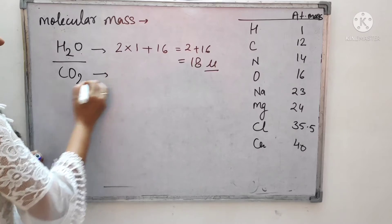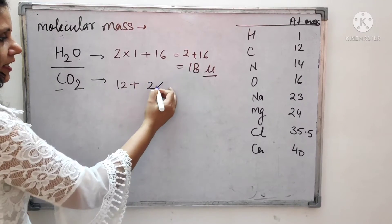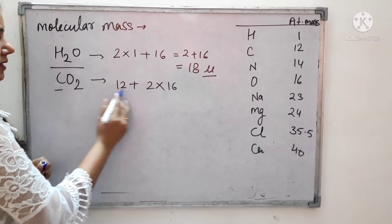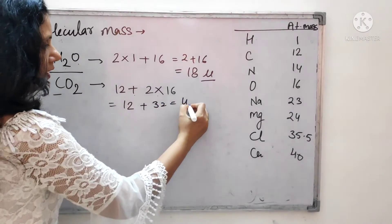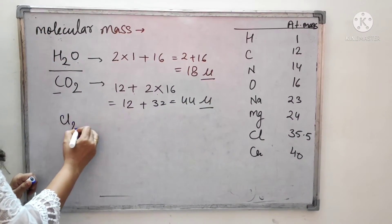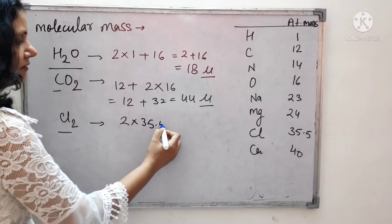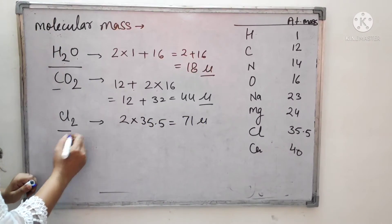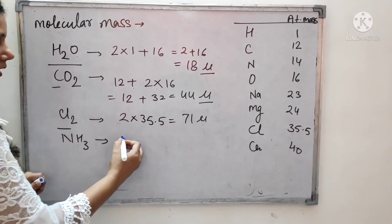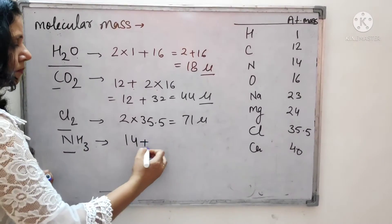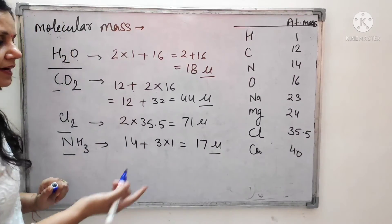For Cl2: 2 chlorine atoms, each having 35.5, so the molecular mass is 71 u. For NH3 (ammonia): nitrogen is 14 plus 3 hydrogen atoms each having 1, so 14 + 3 = 17 u. So in this way you can find out the molecular mass easily.